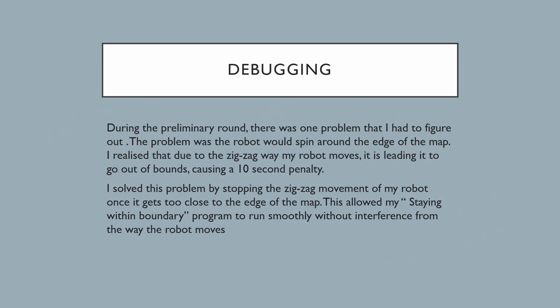During the preliminary round, there was one problem that I had to figure out. The problem was that the robot would spin around the edge of the map. I realized that due to the zigzag way my robot moves, it was leading to it going out of bounds, causing a 10-second penalty. I solved this problem by stopping the zigzag movement once the robot gets too close to the edge of the map. This allowed my staying-within-boundary program to run smoothly without interference from the way the robot moves.